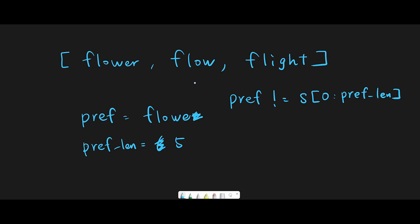Then again we compare flow and this prefix — they are different, so we make prefix short: length becomes four and prefix is now flow. Now flow and the prefix are the same, so we move to the next word. Now flow is the longest common prefix and the next word is flight. We compare: prefix is flow and the new word is flight, and we slice from index zero to prefix length.